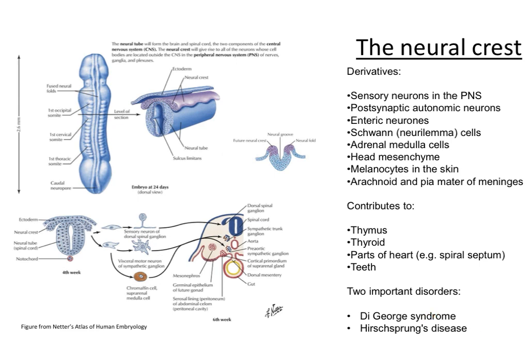In DiGeorge syndrome, we have a number of problems including those affecting the face as well as the thymus, and people with DiGeorge syndrome do have immunodeficiency. Whereas in Hirschsprung's disease, this involves a problem with neural crest cell migration to the gut wall. Certain segments of, particularly the large intestine, can have no enteric nervous system, leading to problems with constipation, for example.